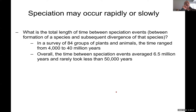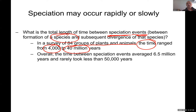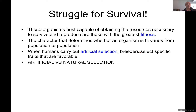Some facts from a survey of 84 groups of plants and animals: the time range for speciation events is from 4,000 to 40 million years. The average time for speciation is 6.5 million years, and rarely it took less than 50,000 years. That's why when we talk about evolution, we talk about hundreds of thousands of years.